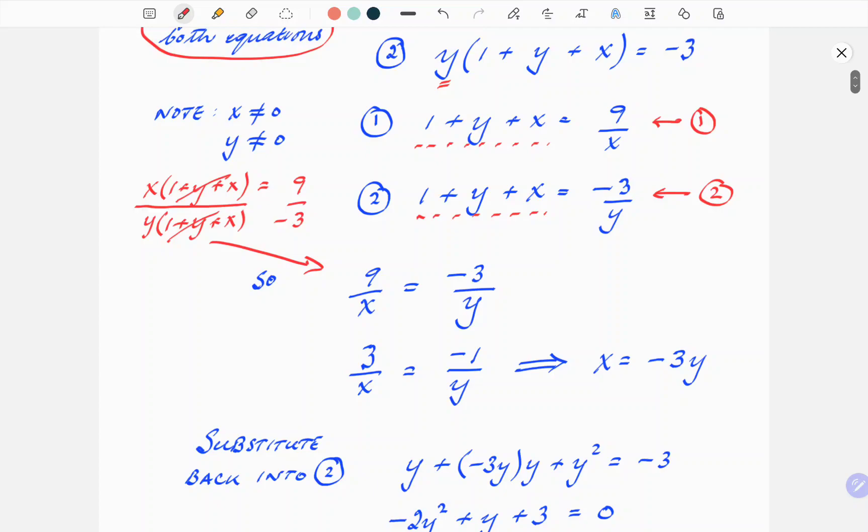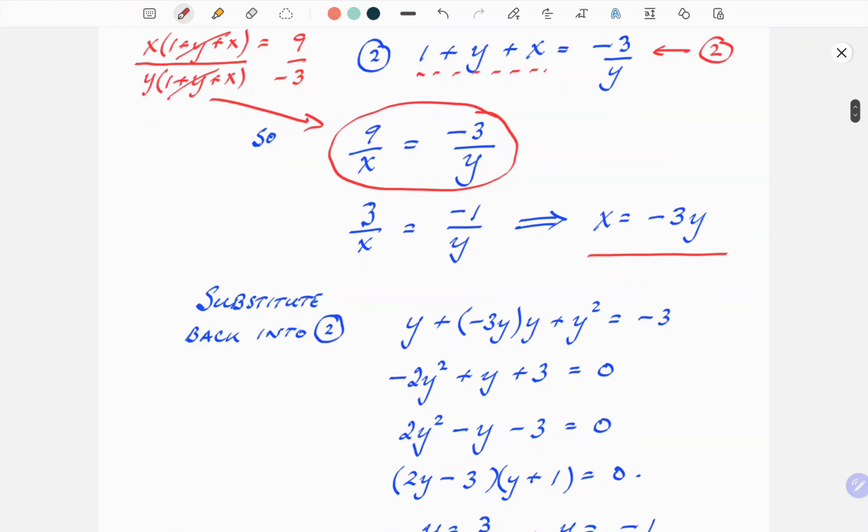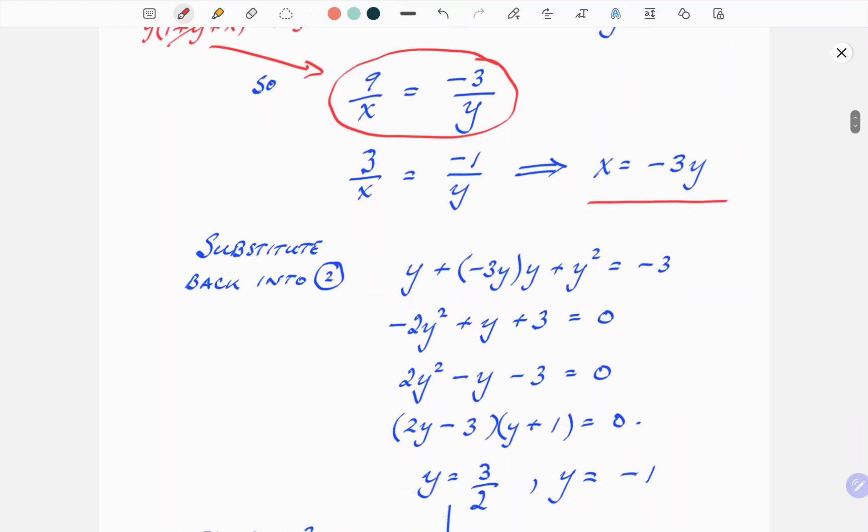So, in the original method that I used, 1 plus y plus x equals 9 over x, and again equals minus 3 over y. I'm equating the 1 plus y plus x, they're both equal, so the two results must be equal. Going on from there, we have this relationship between x and y now. Rearranging that in a couple of steps, just getting rid of the factor of 3, we get expression for x equals minus 3y. So one variable in terms of the other.